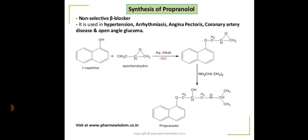Coming to the synthesis of propranolol: propranolol belongs to the category of non-selective beta blockers. It is used in hypertension, arrhythmias, and angina pectoris — a condition in which there is chest pain caused by reduced blood flow to the heart.